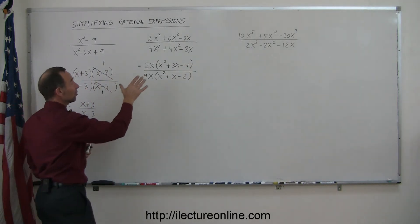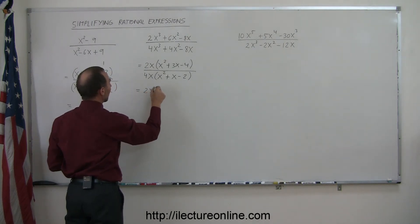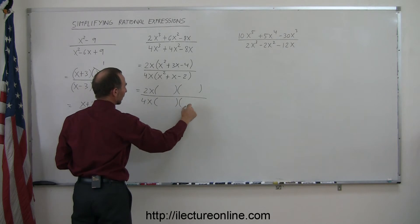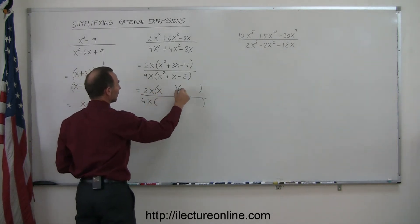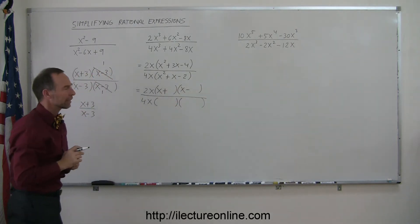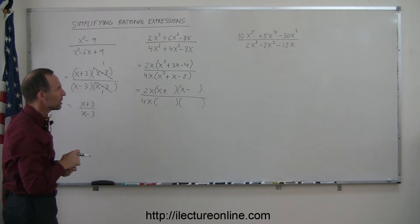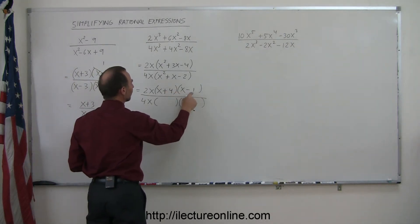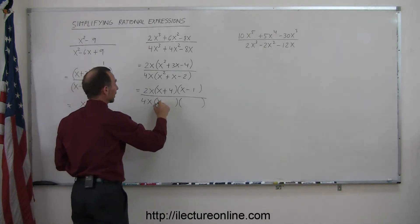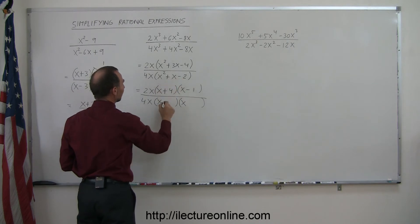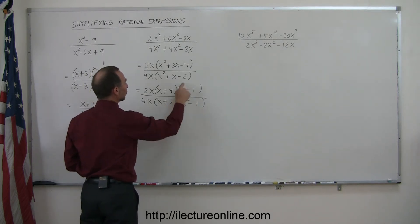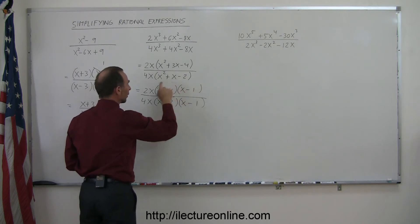Now, is what's in parentheses factorable? For the numerator trinomial x² + 3x − 4, I need an x and an x with one positive and one negative sign. I need two numbers that multiply to −4 and add to +3 — that's +4 and −1. For the denominator x² + x − 2, I need two numbers that multiply to −2 and add to +1 — that's +2 and −1. So the numerator factors as (x + 4)(x − 1) and the denominator as (x + 2)(x − 1).